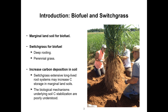This is switchgrass that we excavated from our field site in Oklahoma. You can get some impression of its extensive root system — it can go down up to three meters depth, or even deeper. Another advantage of having such a deep-rooting, long-living root system in the ground is increasing carbon deposition in the soil. However, the biological mechanism underlying carbon stabilization in the soil is still poorly understood.